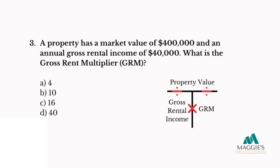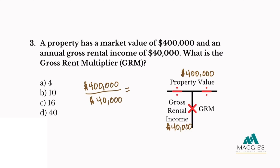Question three: A property has a market value of $400,000 and an annual gross rental income of $40,000. What is the gross rent multiplier, or GRM? A. 4, B. 10, C. 16, or D. 40. I will put the market value of $400,000 at the top under property value and the annual gross rental income of $40,000 at the bottom, so I divide. $400,000 divided by $40,000 equals 10 as the gross rent multiplier. The answer is B.